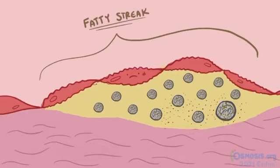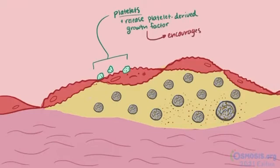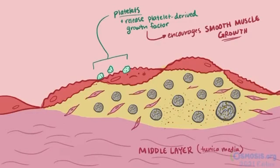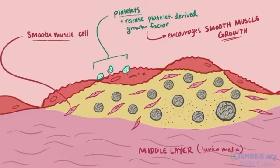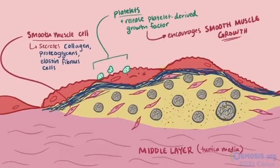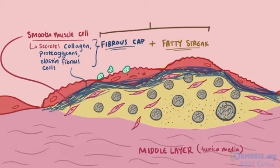The fatty streak is thrombogenic, meaning that blood can clot on it. Platelets begin to gather at the damaged endothelium and release platelet-derived growth factor, which encourages the growth of smooth muscle cells. Normally smooth muscle cells stay within the middle layer of the blood vessel, the tunica media. The release of platelet-derived growth factor draws the tunica media smooth muscle cells to the tunica intima, where they multiply. The growing smooth muscle secretes collagen, proteoglycans, and elastin fibrous cells that help form a wall around the fatty streak, preventing blood clotting. We call this extracellular matrix wall a fibrous cap, and together both the fatty streak and the surrounding fibrous cap is called plaque.